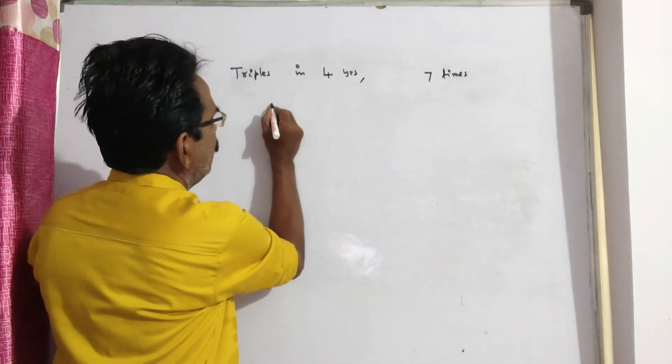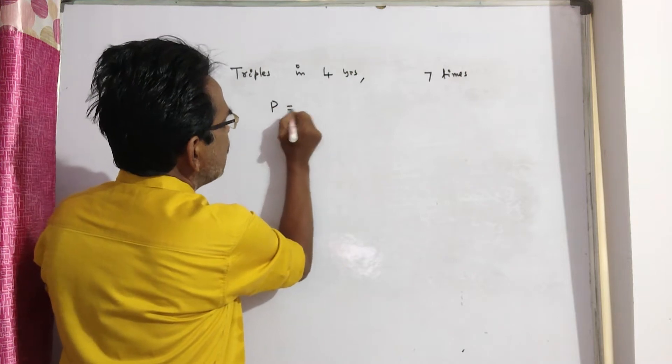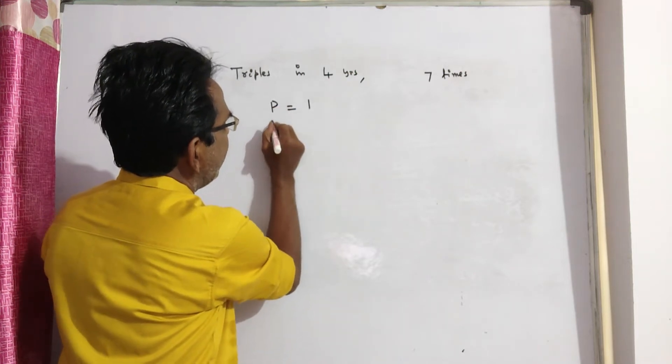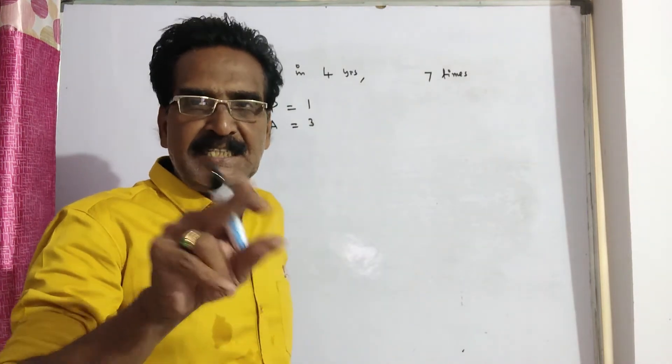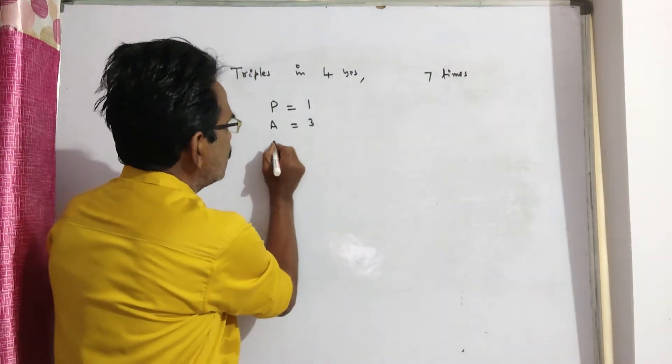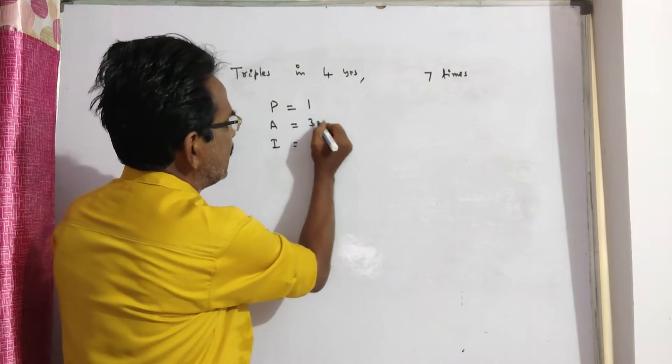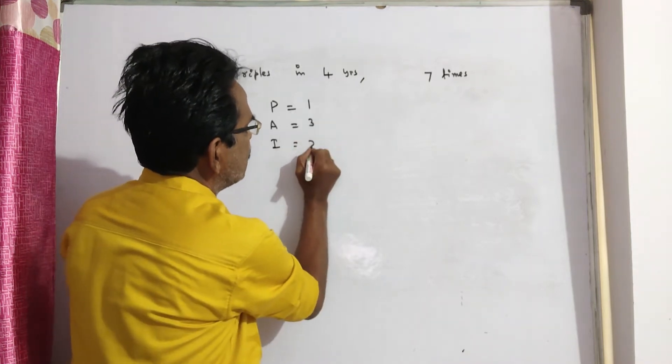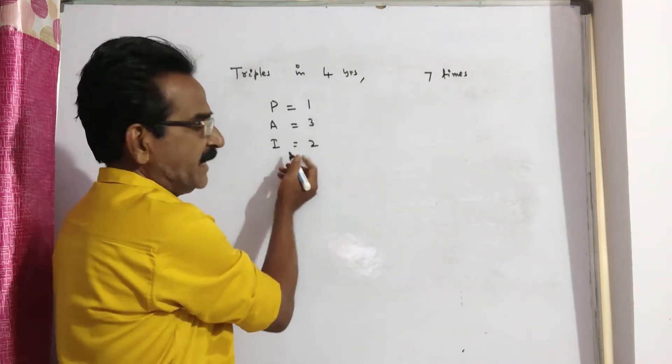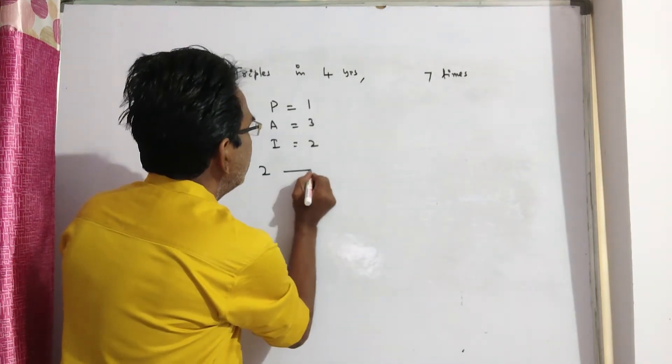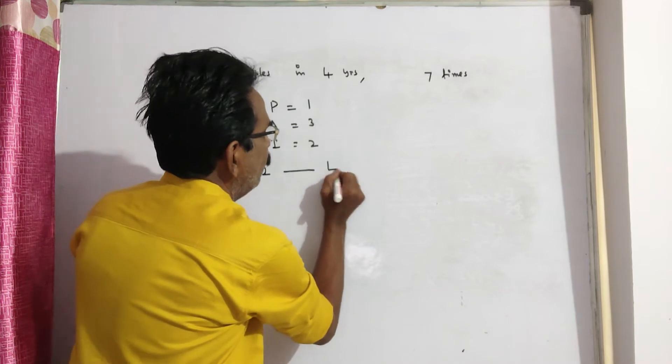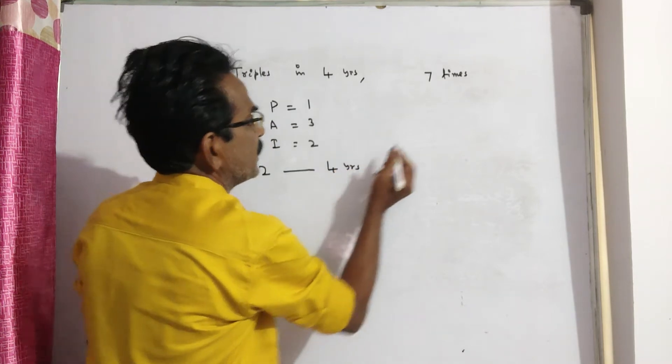See friends, triples means if P is equal to 1, A is equal to 3. One becomes three, then it is tripled. So in the process we get interest. Interest is 3 minus 1, which is 2. So for getting interest 2 rupees, it takes 4 years.